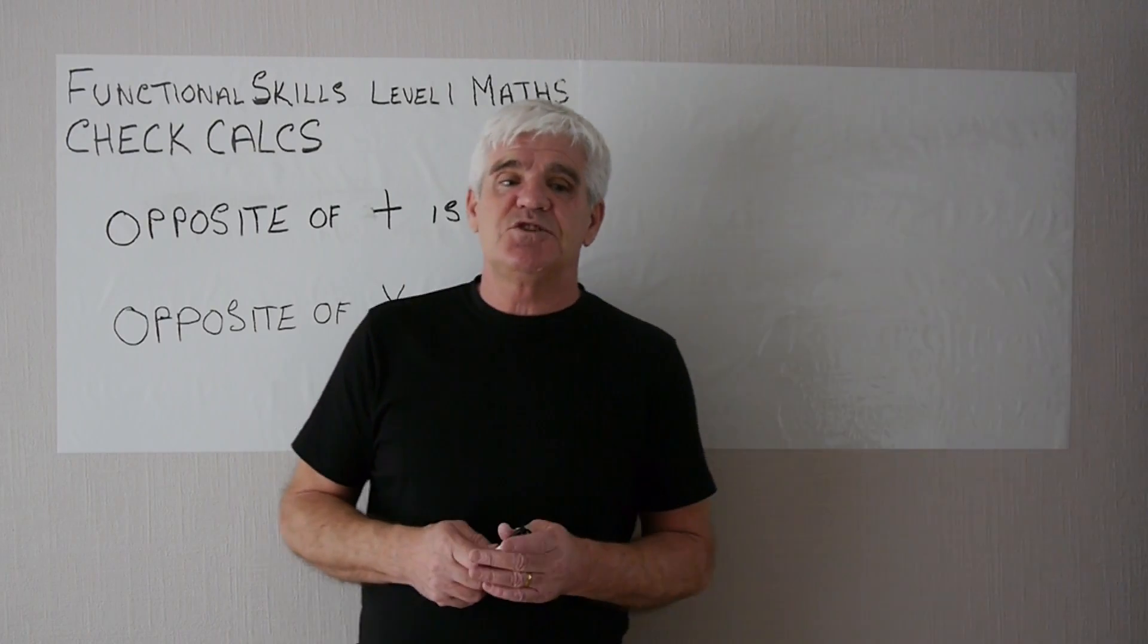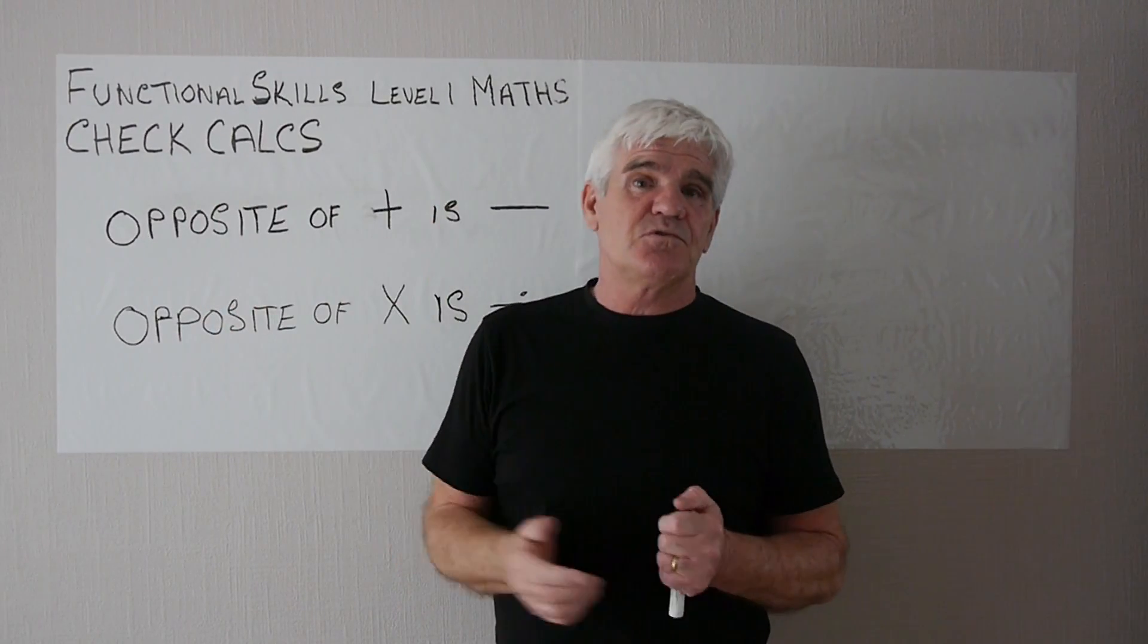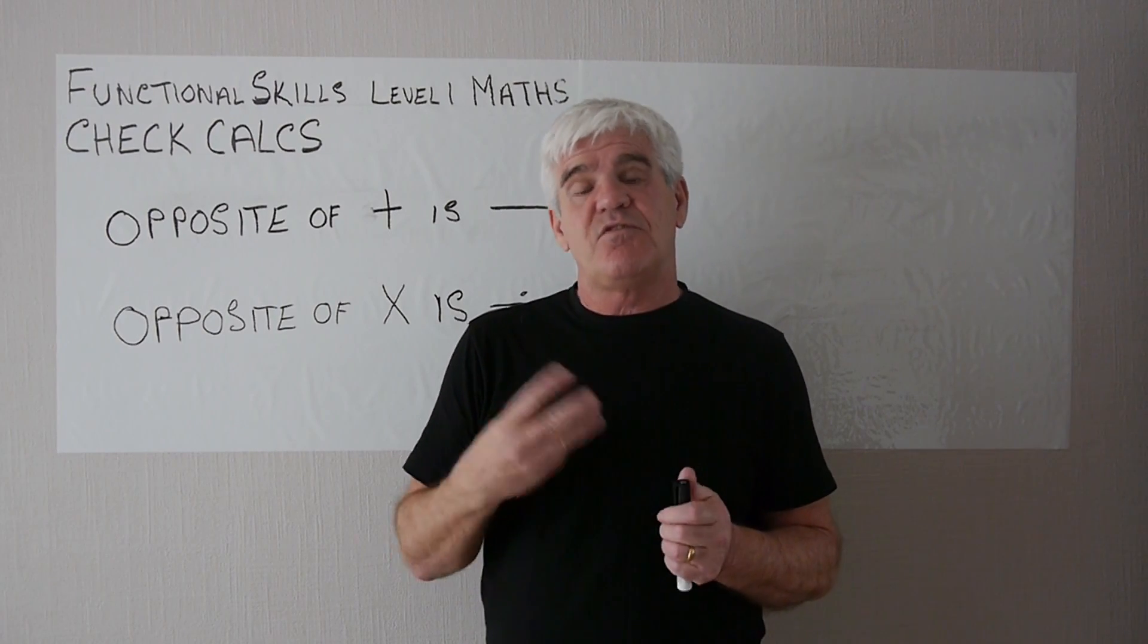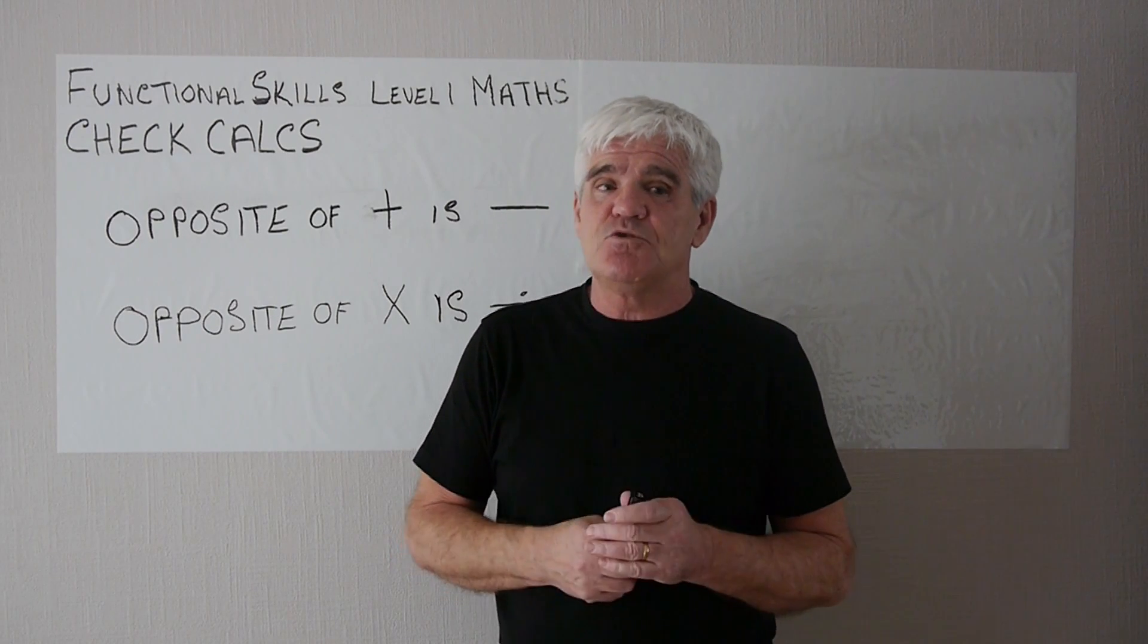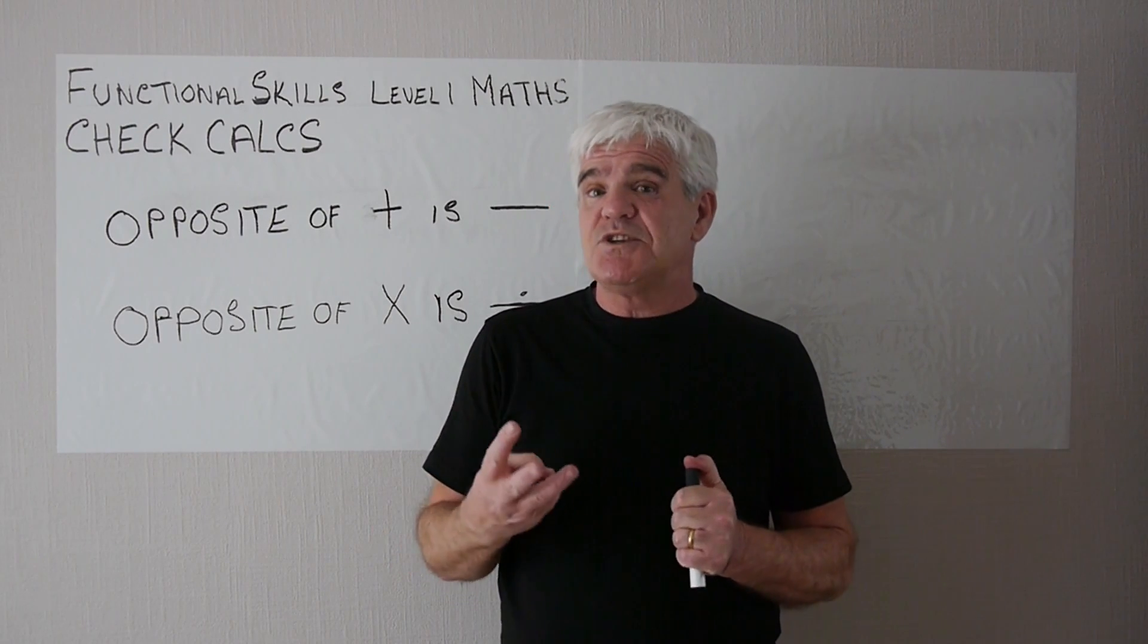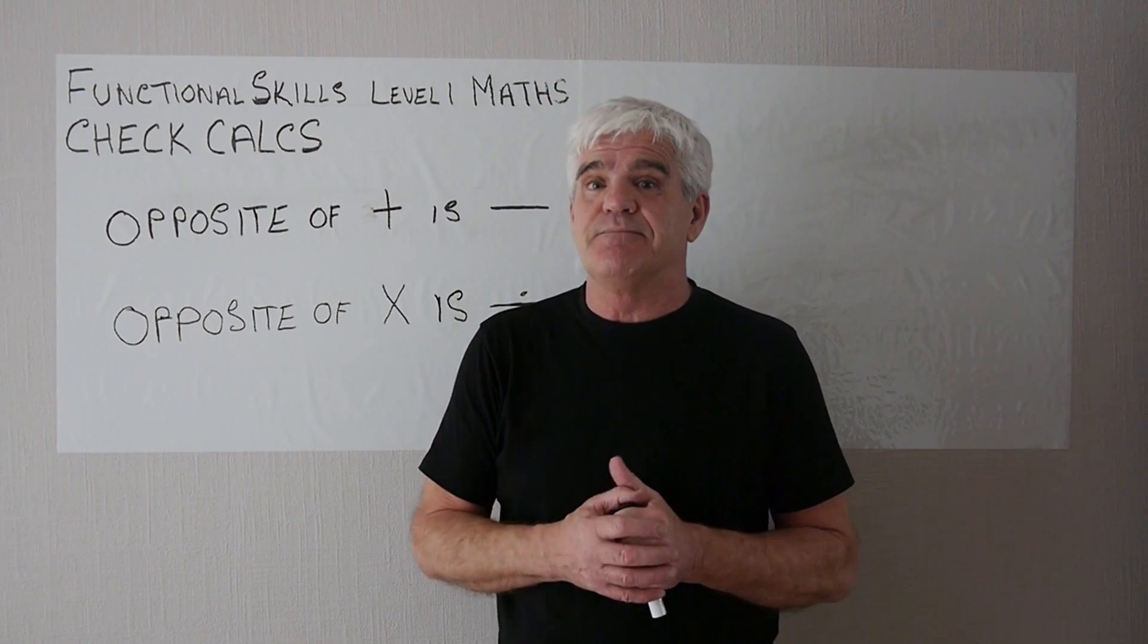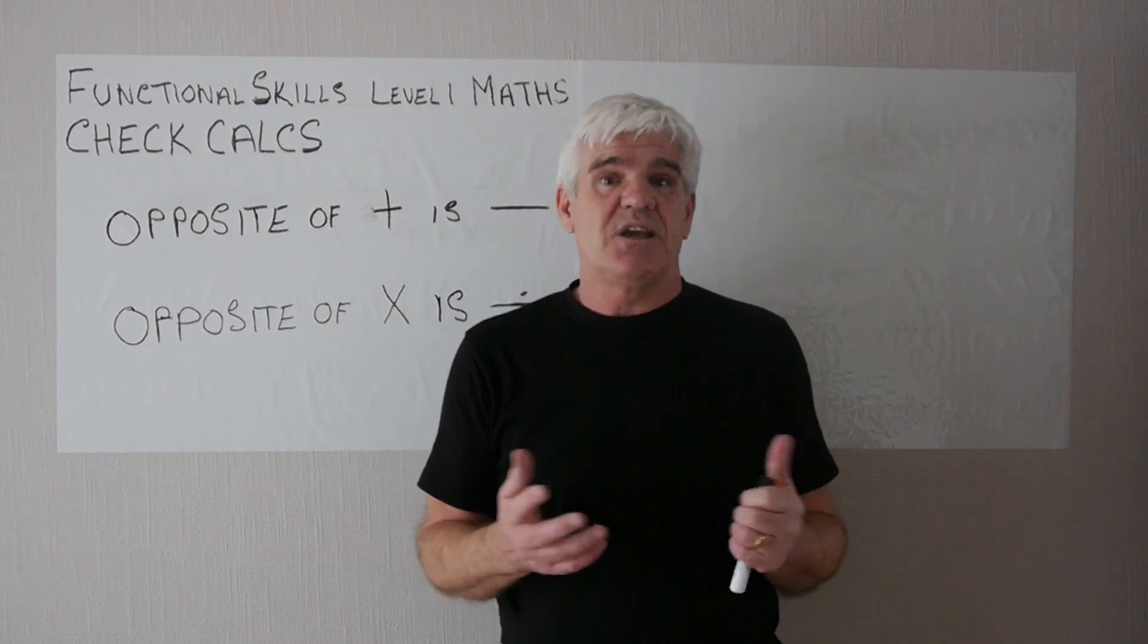Before this video ends, I just want to tell you about what is called check calculations, check calcs. In a functional skills level 1 maths exam, you normally get three questions. And at the end of each question, you'll be asked to perform a check calculation, which is worth two marks, two points. So for three questions, that's six points. That could be the difference between passing and failing a maths exam.